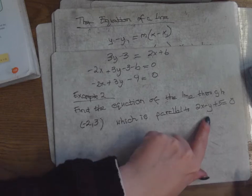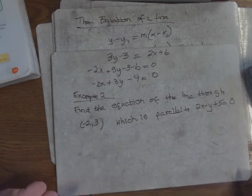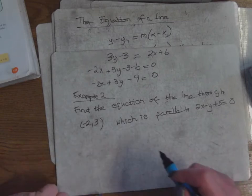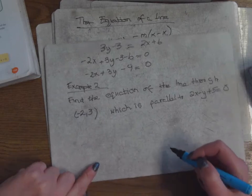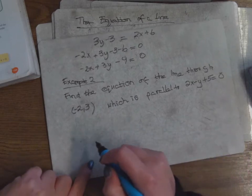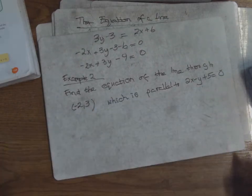So how do I get the slope of a line from the equation? This is why we're doing this example — how do you get the slope of a line from an equation?